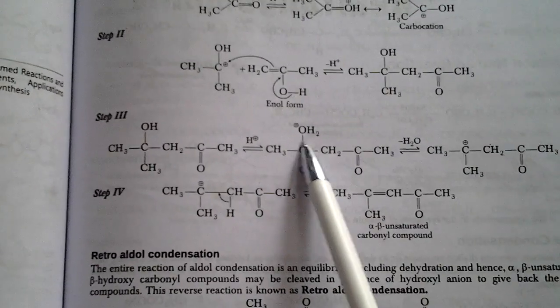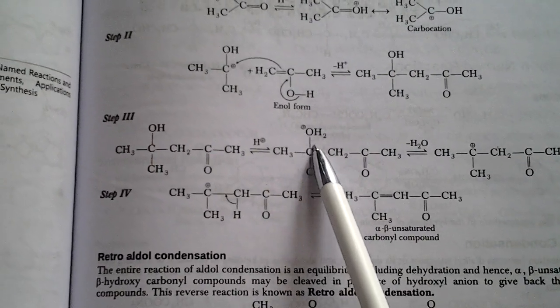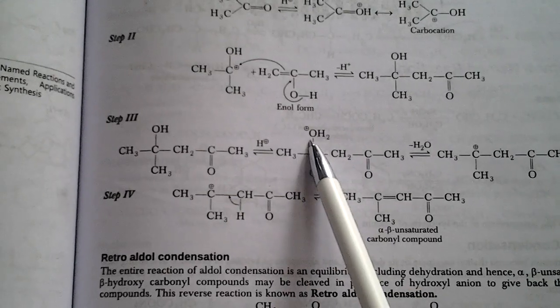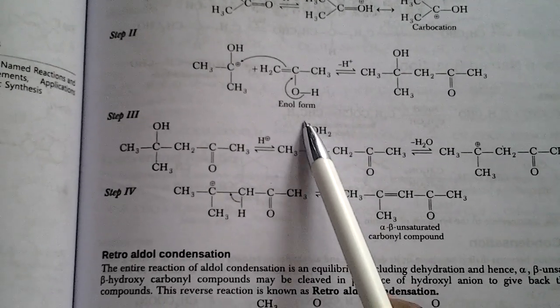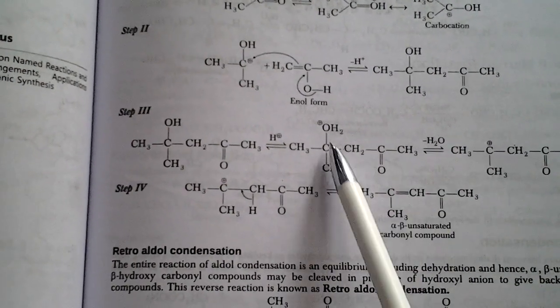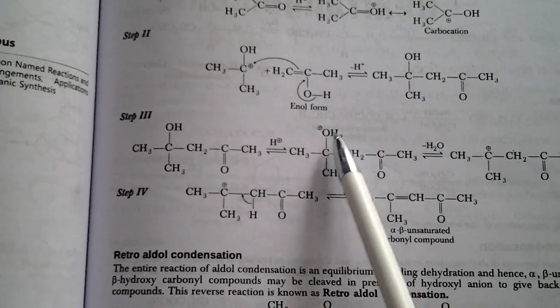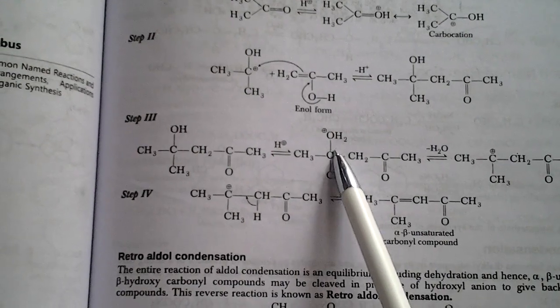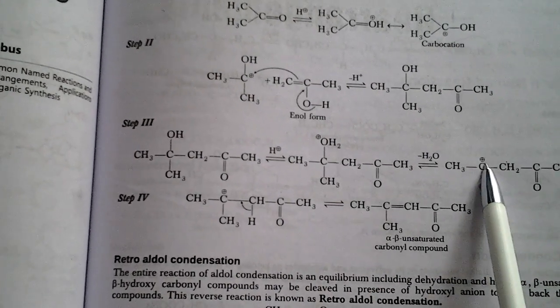Thereby leading to carbocation. Minus will be taken by oxygen, and one plus and minus will be broken in the form of a molecule. Hence, the minus will be broken and plus charge will be present—the carbocation. It is in the beta position. See: functional group, alpha carbon, and beta carbon.